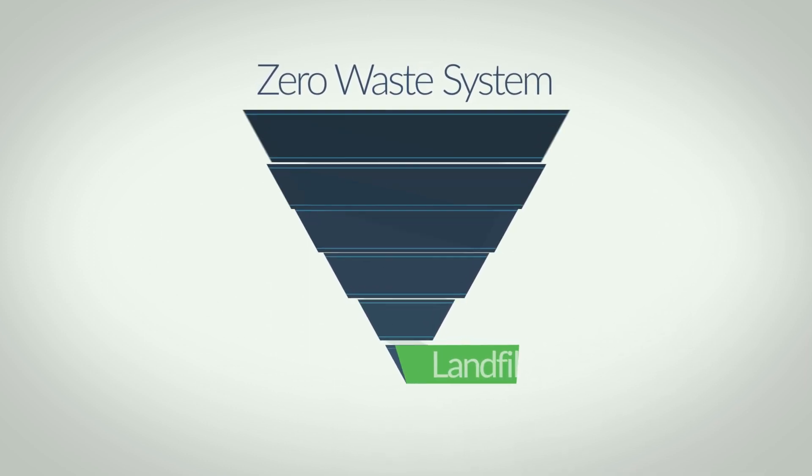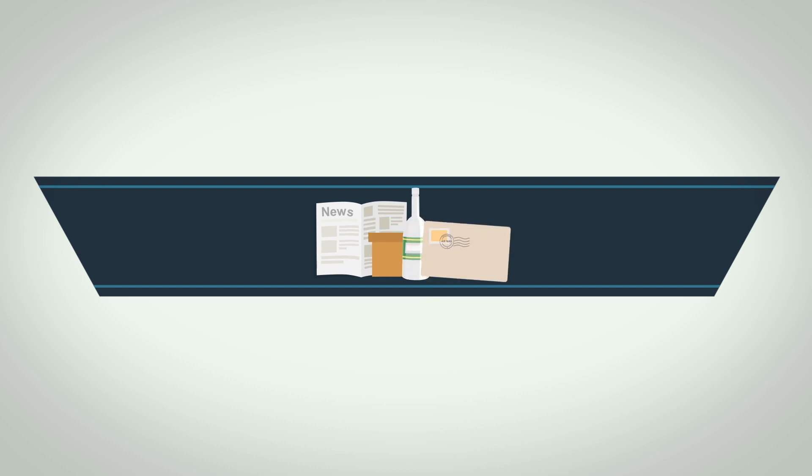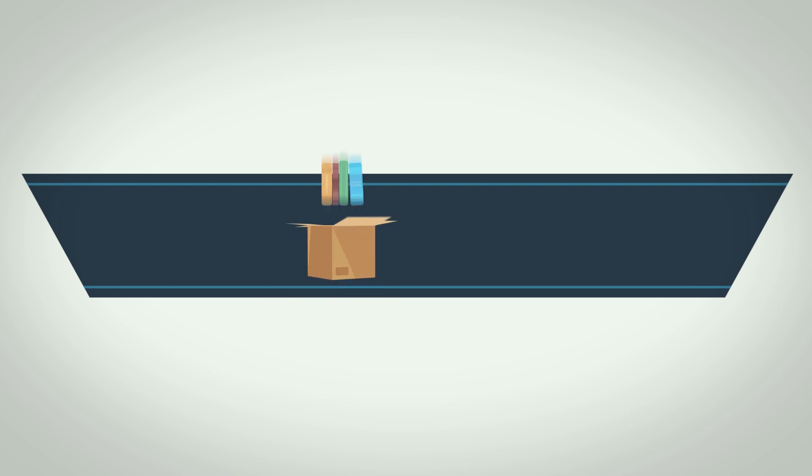There are six levels of this hierarchy. The first level requires us to think and reduce consumption of products that are not recyclable or compostable. The second is for us to reuse packaging and material whenever possible.